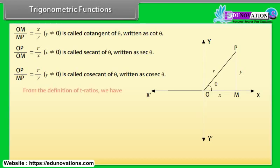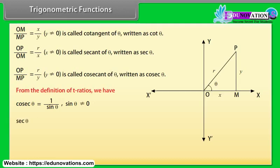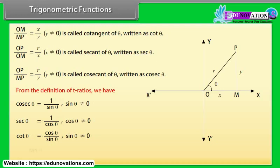From the definition of T-ratios: cosec θ = 1/sin θ (sin θ ≠ 0); sec θ = 1/cos θ (cos θ ≠ 0); cot θ = cos θ/sin θ (sin θ ≠ 0); tan θ = sin θ/cos θ (cos θ ≠ 0).